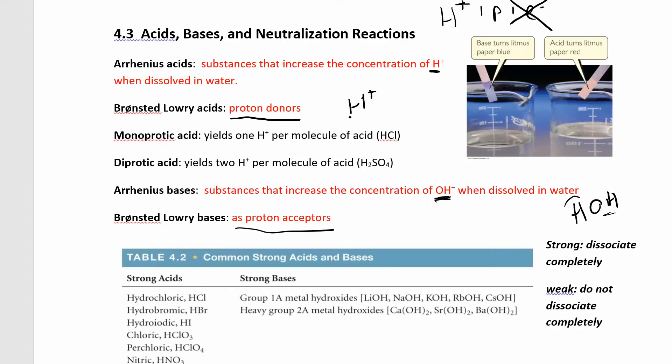If you can get rid of one proton, one H, then we say that's a monoprotic acid. If you have two hydrogens that you can get rid of, like here in the sulfuric acid, then we call that a diprotic acid. You can even have a triprotic acid, something like H3PO4.